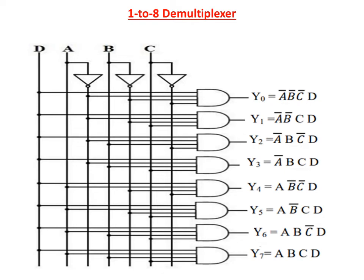This is the logic diagram representation for the 1 to 8 D-multiplexor. The data input is D and the 3 selection lines are A, B, C. At this position we will get A bar, B bar and C bar. The product terms are implemented by AND gates. The first AND gate output is Y0, the second is Y1, and so on up to Y7. This is the way we can draw the logic diagram for all 8 outputs.